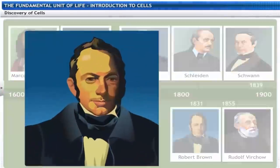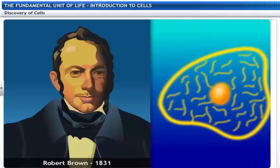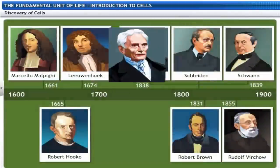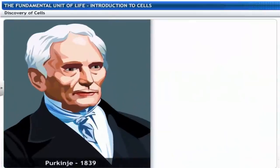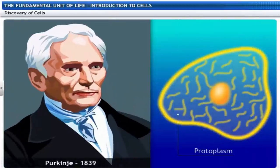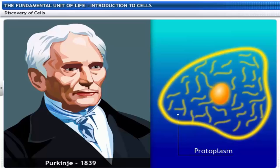Robert Brown, in 1831, discovered the nucleus in the cell. Perkinier, in 1839, coined the term protoplasm for the fluid substance of the cell.